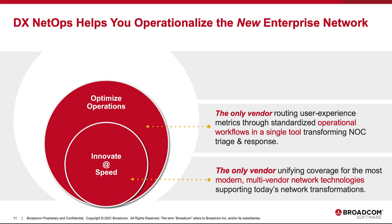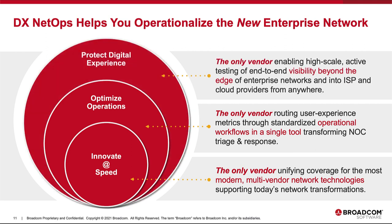Marrying network path and end-to-end delivery information with network device performance data enables routing of user experience metrics from Appneta through customers' standardized operating procedures and workflows in a single tool. This transforms operations triage and response, and protects the digital experience. We are the vendor with the highest monitoring scale in the industry, combined with Appneta's active testing for complete end-to-end visibility and isolation of performance degradation across managed and unmanaged networks.